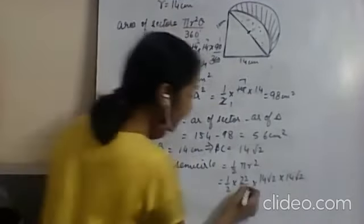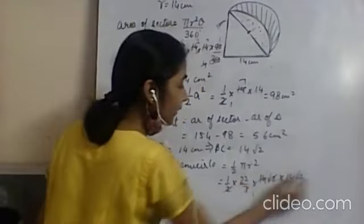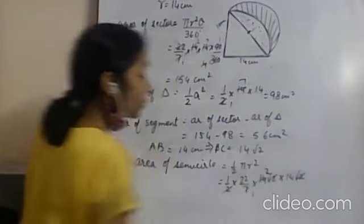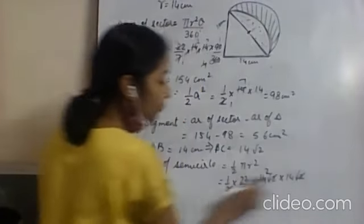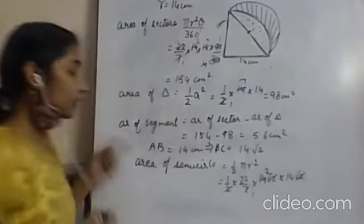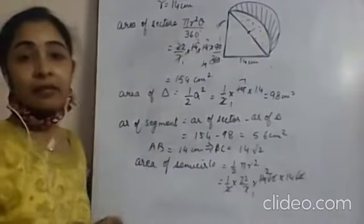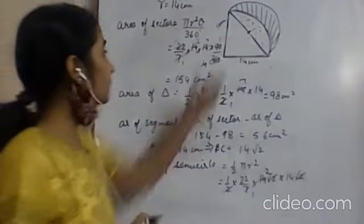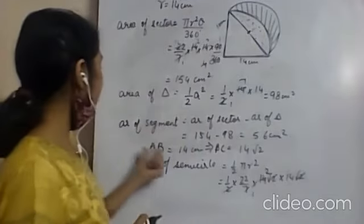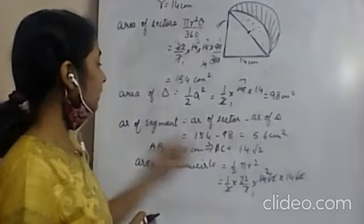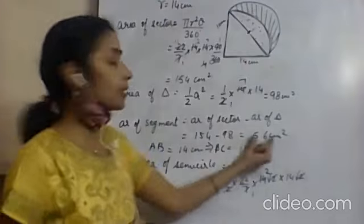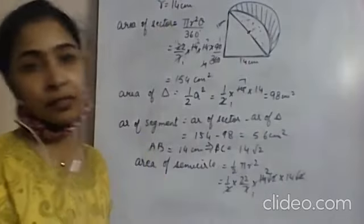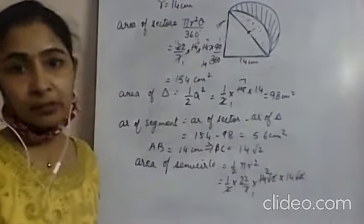Simplifying: the 2 and root 2 squared cancel, and 7 and 7 cancel. This gives 14 into 22 upon 2 — we get the area of the semicircle. Then area of semicircle minus area of segment gives the area of the shaded region.